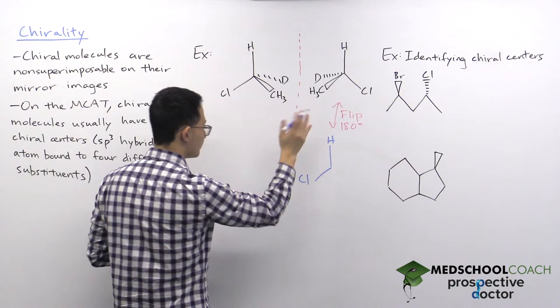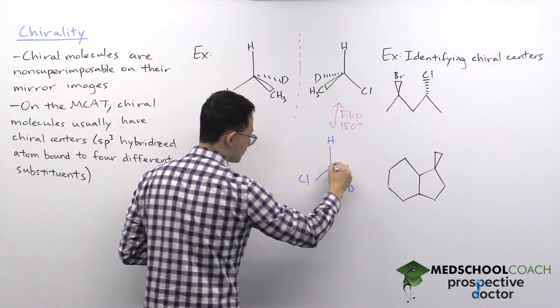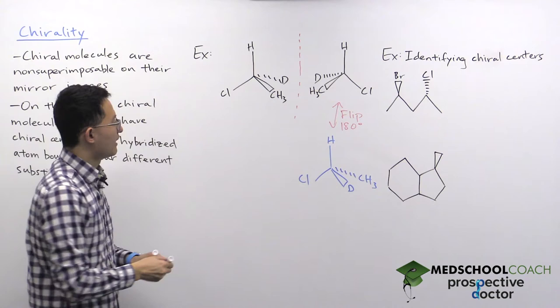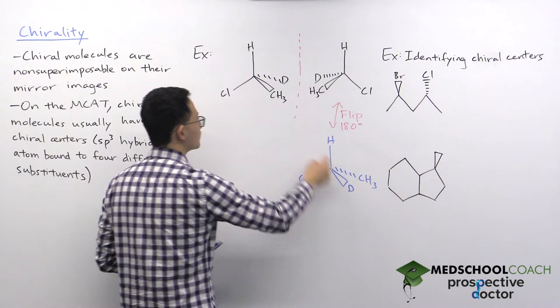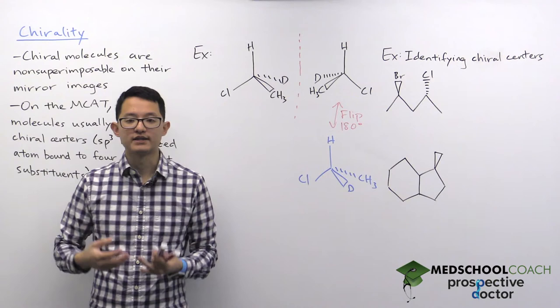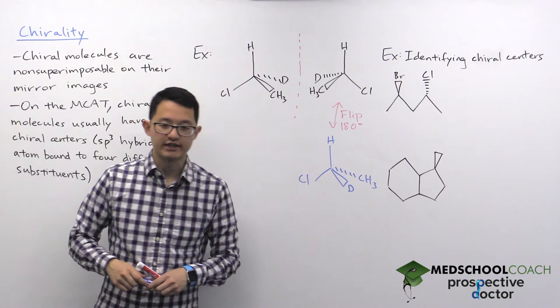However, when you flip the molecule, what you're going to observe is that the substituent coming out of the page towards us is the deuterium, and going into the page is the methyl group. So now, even though the hydrogen and the chlorine stack on each other, the deuterium and the methyl groups will not, demonstrating that these two molecules are chiral because they are non-superimposable.